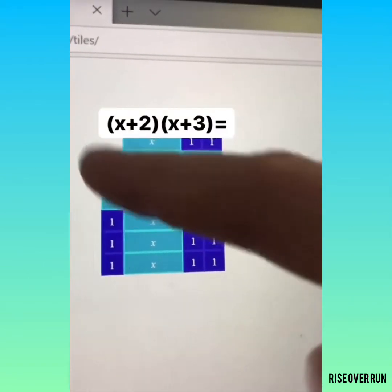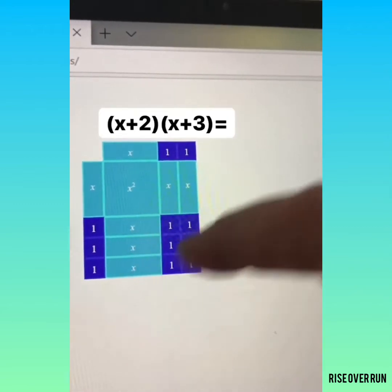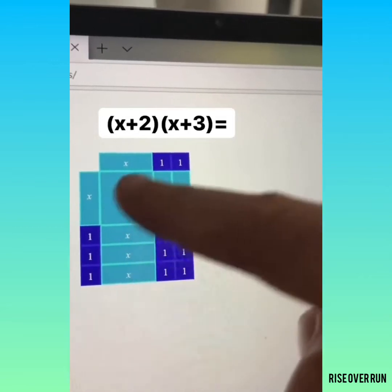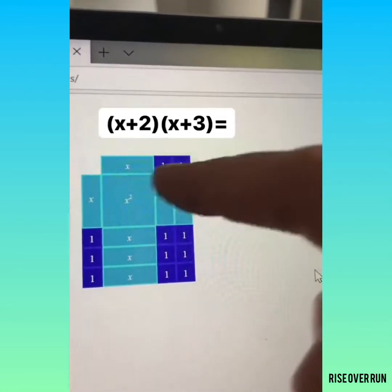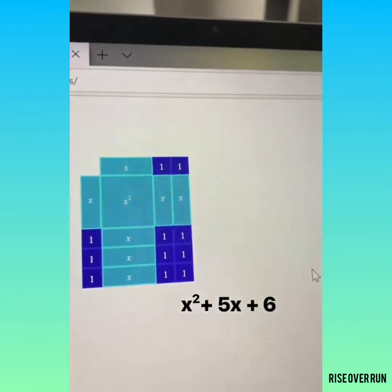So here were our factors along the edges here, x plus 2 and x plus 3. In here, the area is the product. If we see what we have here, that total thing is our answer. So we have x squared plus 5x plus 6.